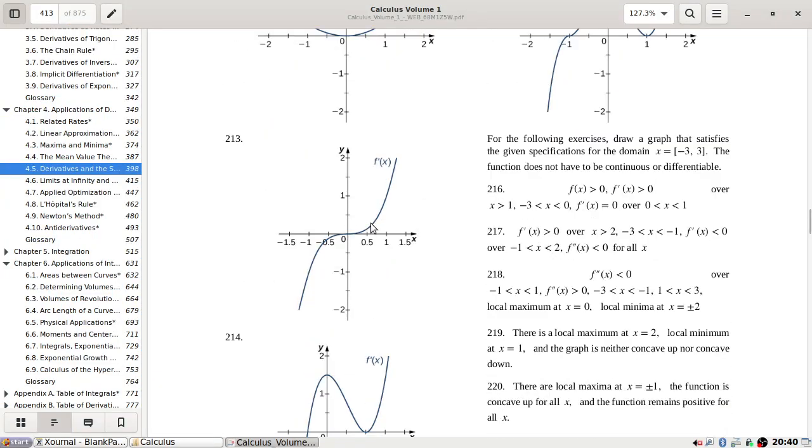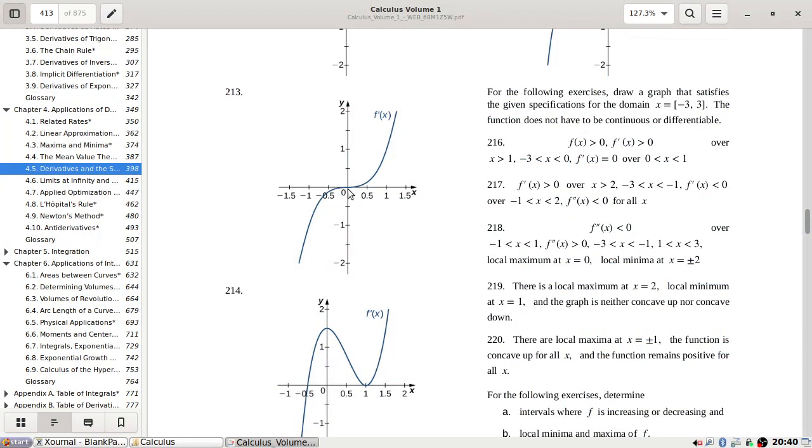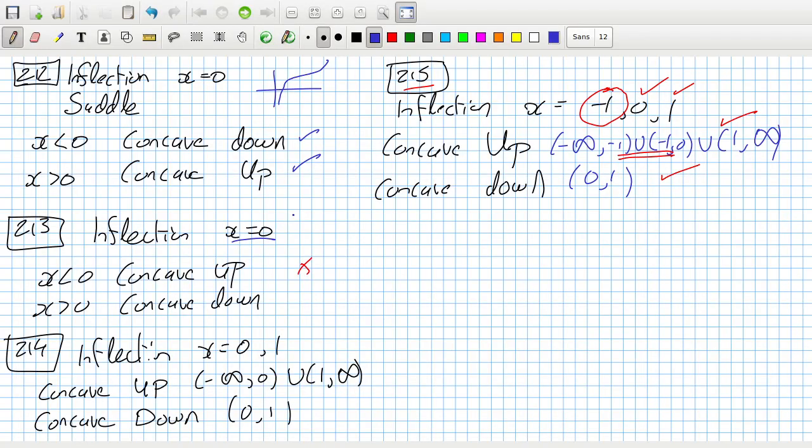The 213 is where I'm wrong. Inflection at zero. Oh, but the first derivative is zero as well. I forgot I had to go back and check on that. Yeah, that's my bad.